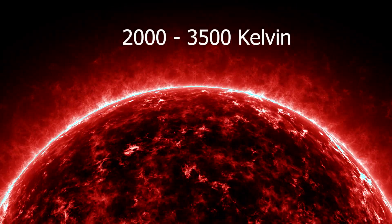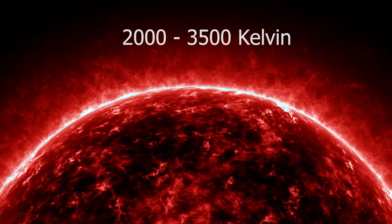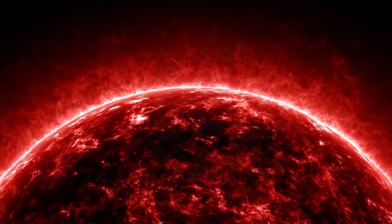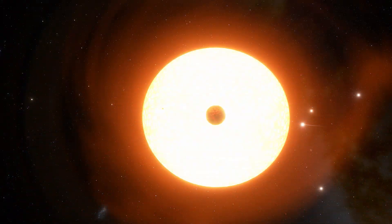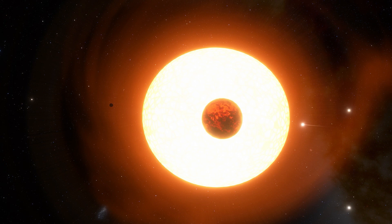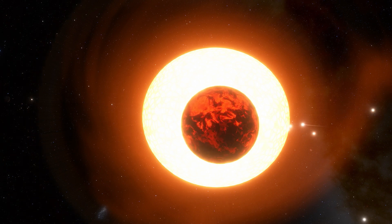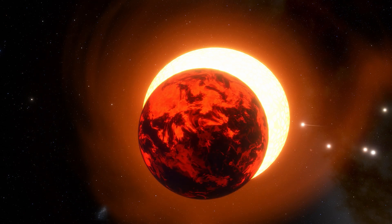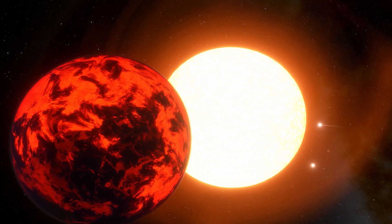They burn at a cooler temperature than yellow stars. Because their surface temperature is lower than yellow stars, the habitable zone for planets orbiting these red stars is much closer in when compared to planets orbiting yellow stars. The main problem that is caused by this close orbit is that planets become tidally locked to their stars.